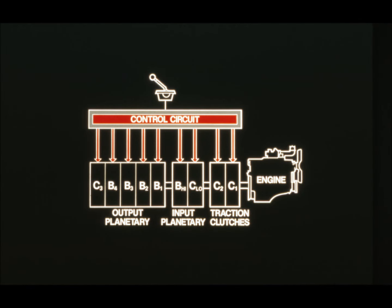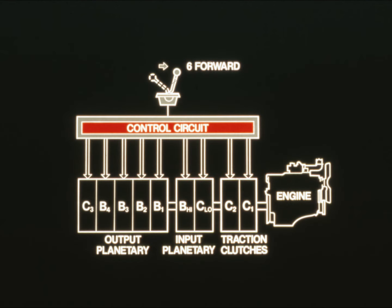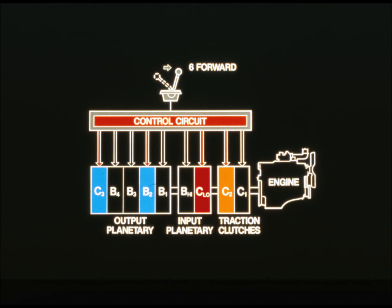The hydraulic control circuit engages the clutches and brakes by directing the flow of oil to them. Springs in the transmission disengage the clutches and brakes. Placing the control lever in a certain speed — for example, six forward — shifts the appropriate valves in the control circuit.